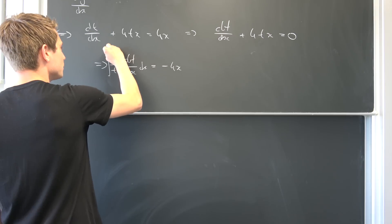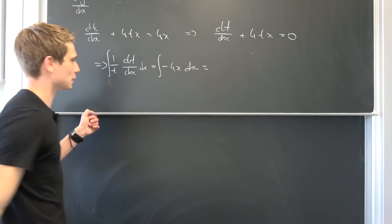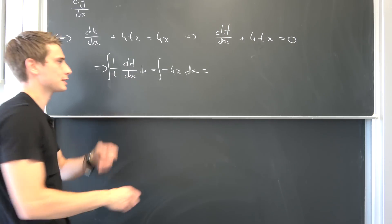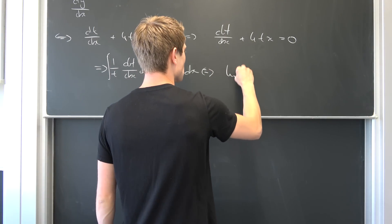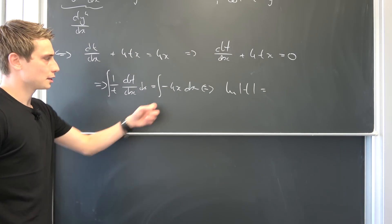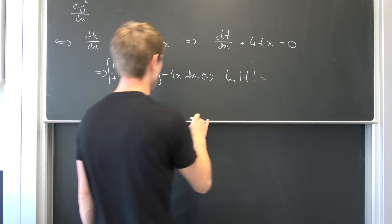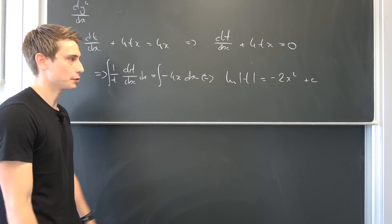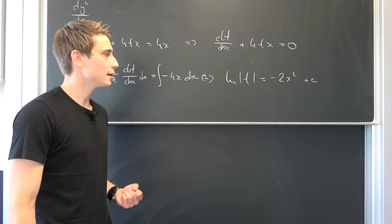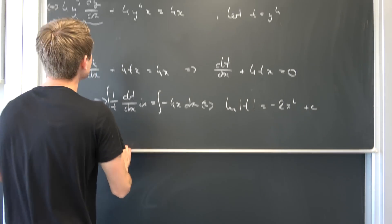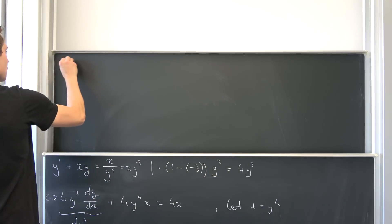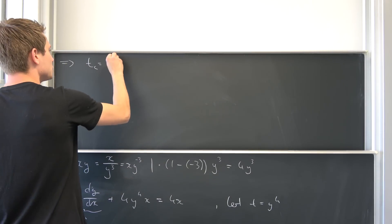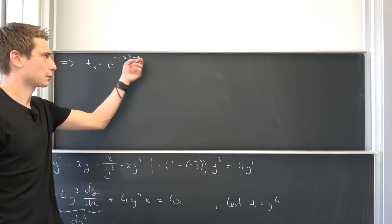Now we can integrate both sides with respect to x and we are done with the complementary solution. Integrating both sides gives us, on the one hand, the natural log of t. On the other side, this evaluates to negative 2 times x squared plus some arbitrary constant c. Exponentiating both sides, we get t complementary equal to e to the negative 2 times x squared plus c, which by the exponential property becomes e-schlange times e to the negative 2x squared, where e-schlange is an arbitrary constant.